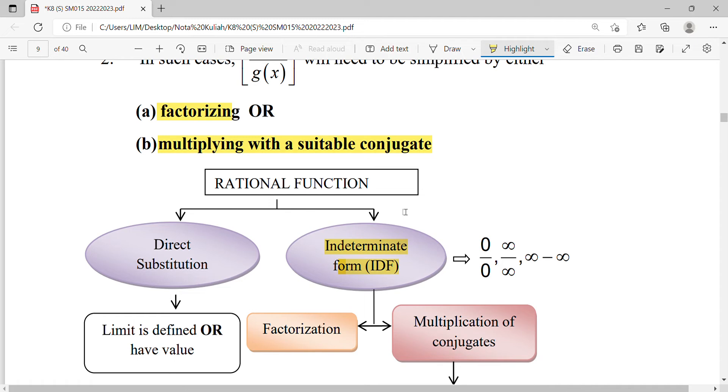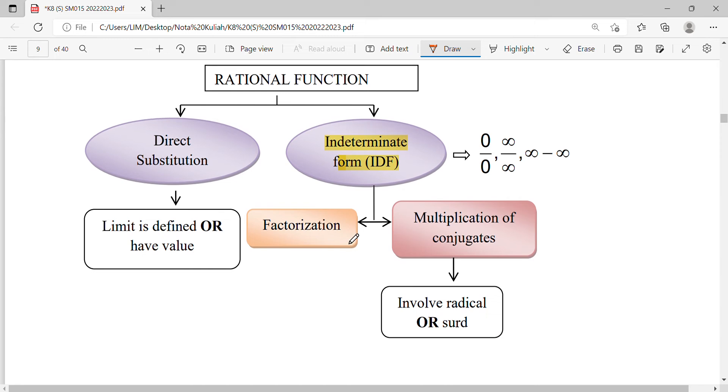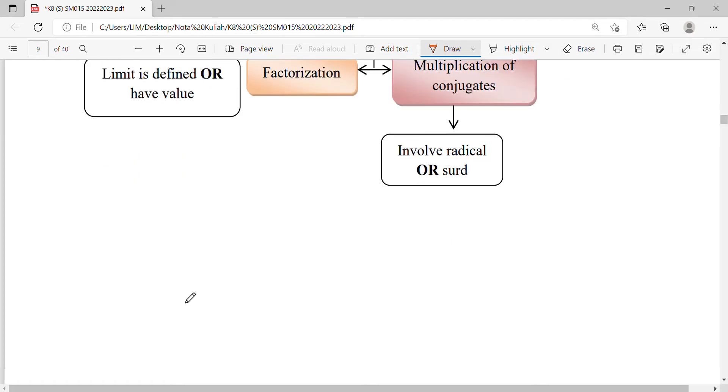If your function is in the type of polynomial, we can factorize. If your function is in the type of third function, we are doing conjugate. So in indeterminate form, IDF, you have to simplify the function first. Factorize or conjugate. After that, you repeat the process.